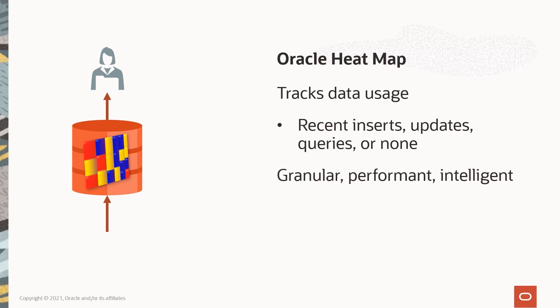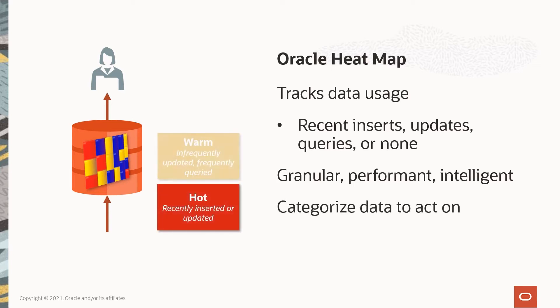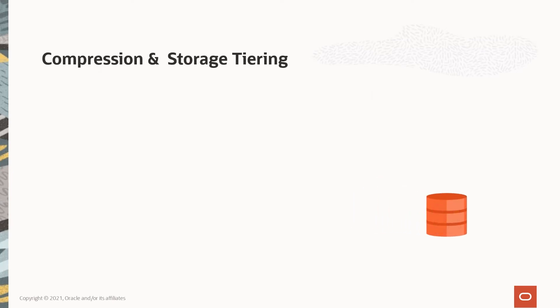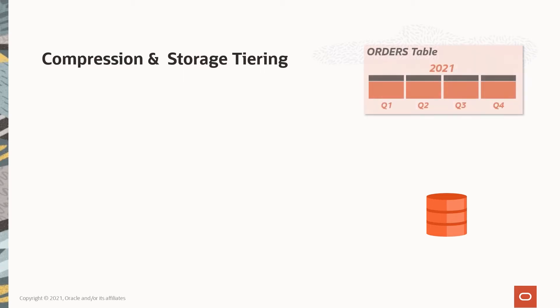Now that we have our data mapped, we can categorize it for our needs — for example, identifying the data as hot, warm, or cold. Based on these categories, we can begin to make intelligent decisions and take actions that increase performance and save us money, which brings us to our next capability: compression and storage tiering.